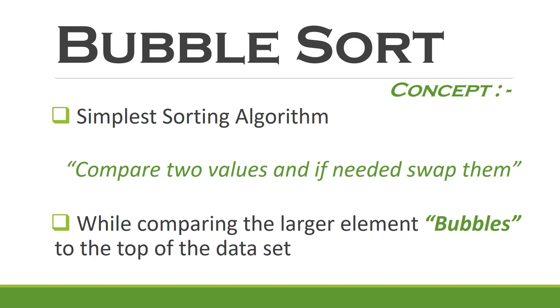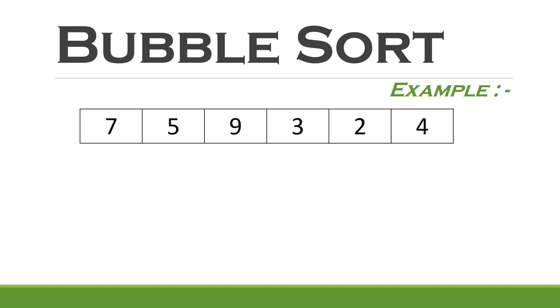Let's try to understand this with some examples. Let's say we have an array of six elements which are unsorted. Bubble sort runs in iterations, and the purpose of each iteration is to push the largest available number towards the end of the list. These iterations are called a pass here.